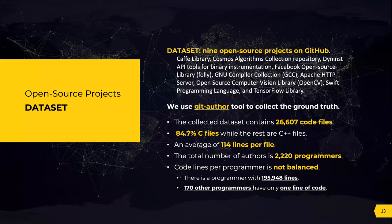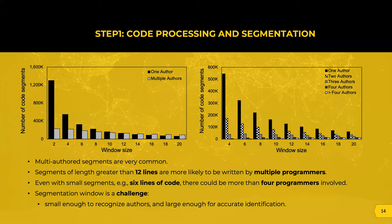To conduct our experiment, we collected a large dataset of nine large open source projects from GitHub, and used git author to obtain the authorship of every line in all files. The collection included more than 26,000 code files and 2,200 programmers. For our analysis, addressing code segmentation, we observed that multi-authored segments are very common. In fact, code segments with more than 12 lines of code are more likely to be written by multiple authors. Even smaller segments can be written by more than four programmers, which motivates a fine-grained approach and indicates the challenge in selecting the segment size. We evaluate the effect of using different window sizes to segment the code and their effect on the accuracy of the identification process.